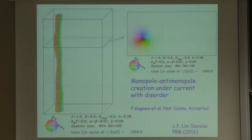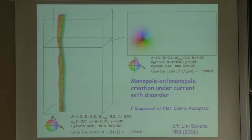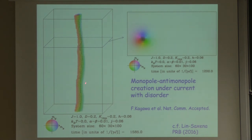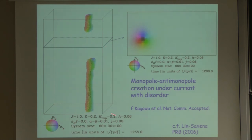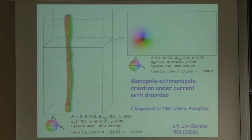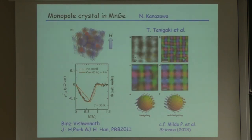We performed numerical simulations of skyrmion dynamics with impurity potential and external current. You can see distortion being excited and the structure pinching. The velocity of this monopole and antimonopole are different — upward versus downward — as a consequence of the non-reciprocal nature between z and minus z.